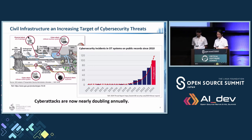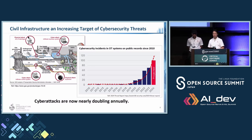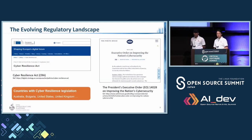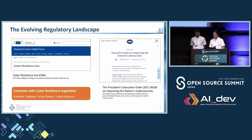Another major concern is the increasing cybersecurity threats to these systems. Since around 2018, incidents in OT systems have nearly doubled each year. This is not just a number — it means real threats to our power grid, transportation, and other critical infrastructures. Governments are already taking action. We are already seeing activities like the EU Cyber Resilience Act and the US Executive Order on improving cybersecurity. These activities are pushing industries to prioritize cyber resilience. It's no longer optional — it's mandatory.